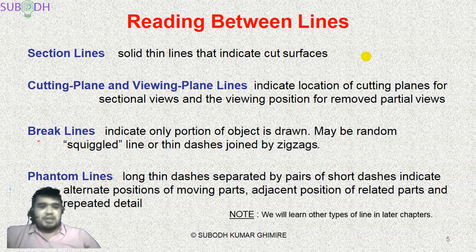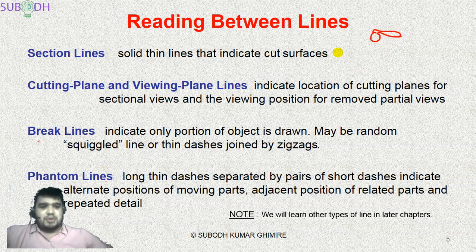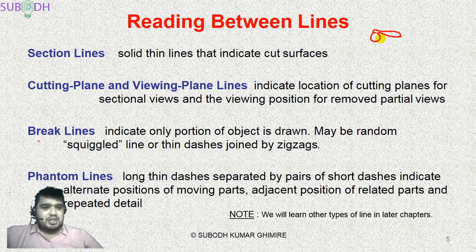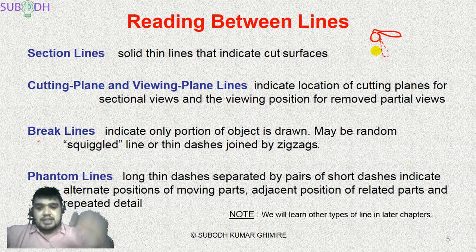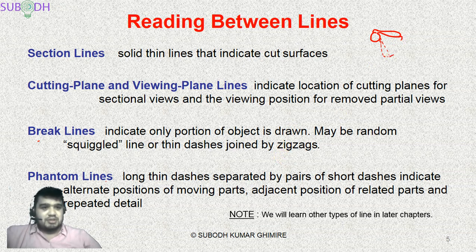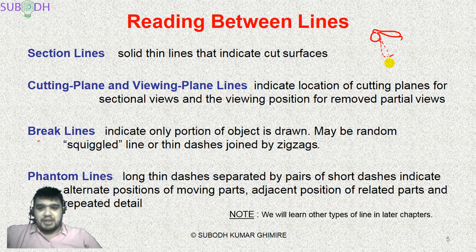The phantom line is used for alternate positions. For example, if you have a handle that can rotate, the phantom line shows the alternate position of the rotated part. If you can see the range of motion, you use the phantom line to indicate that alternate position. This is how phantom lines are used in engineering drawing practice.